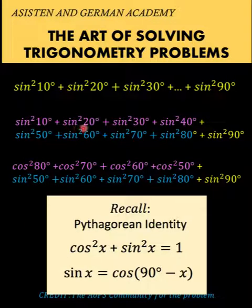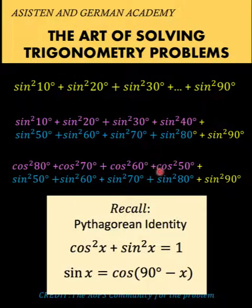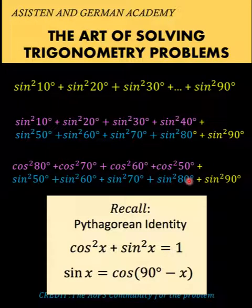We do the same for the remaining terms: sine squared 20 degrees becomes cosine squared 70 degrees, and sine squared 30 degrees becomes cosine squared 50 degrees. All the rest of the terms are just copied as they are.